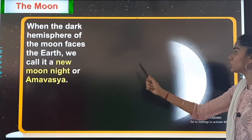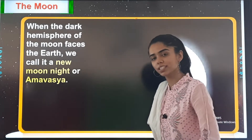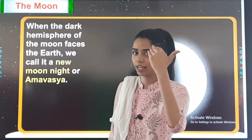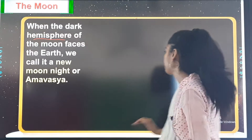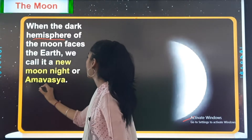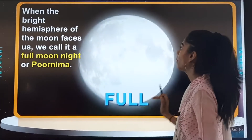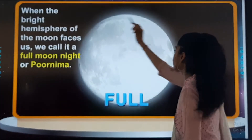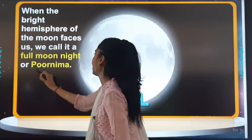When the dark hemisphere of the moon faces the earth, we call it a new moon or amavasya. When the bright hemisphere of the moon faces the earth, it is known as a full moon or purnima.